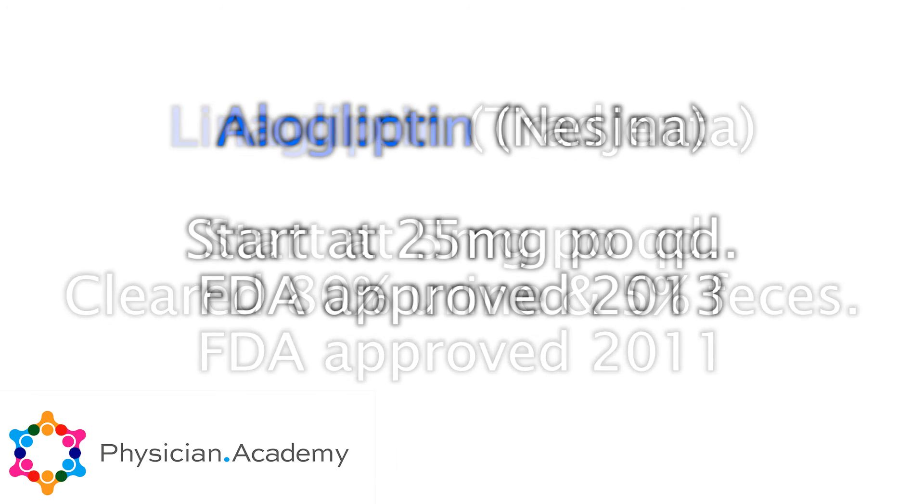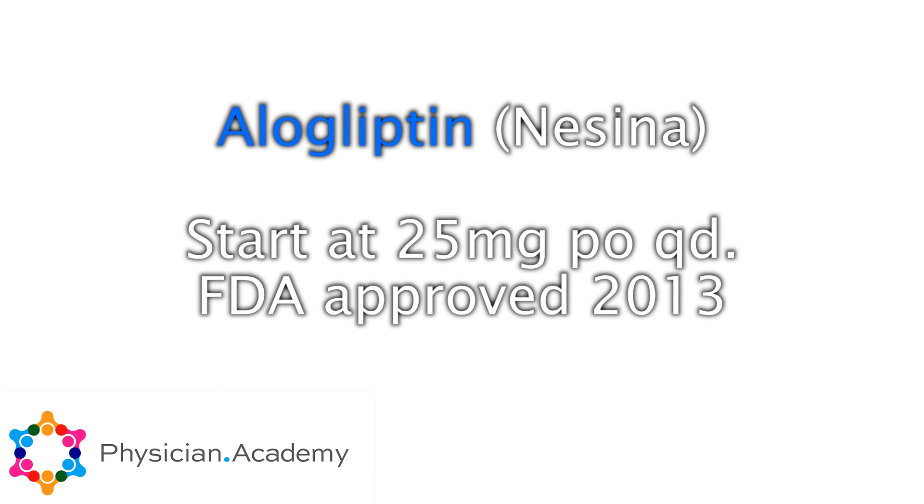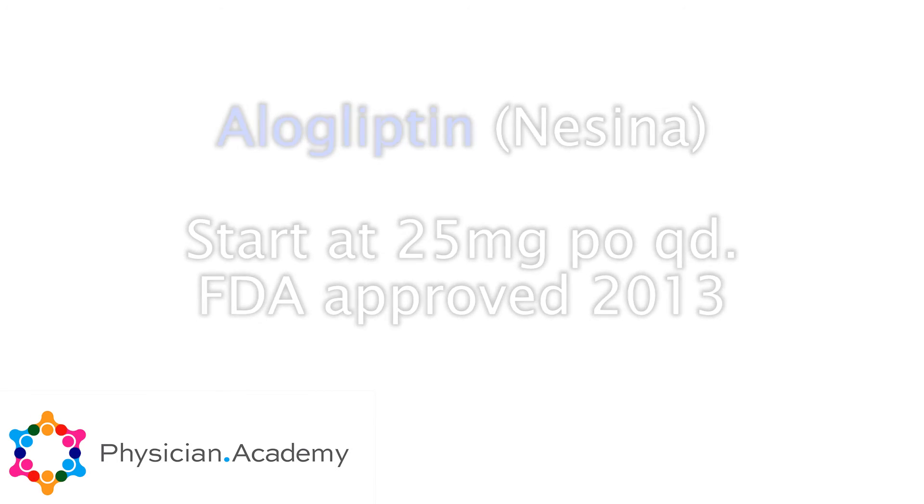Alogliptin comes as a 25 milligram only, started at 25 milligrams once a day. The nice thing is there are combination pills. Januvia comes as a combination — Janumet — that's sitagliptin and metformin together, and that works really well. You can give it as a combination pill, and there are fewer pills for the patient to take.